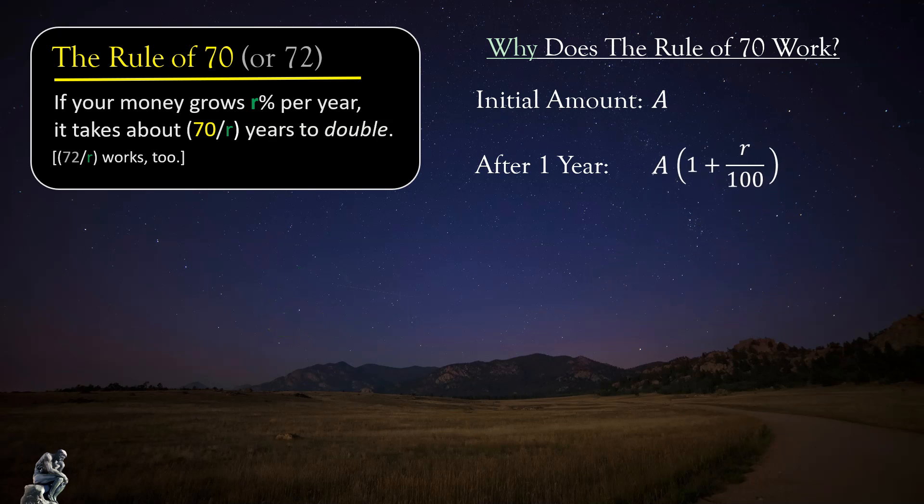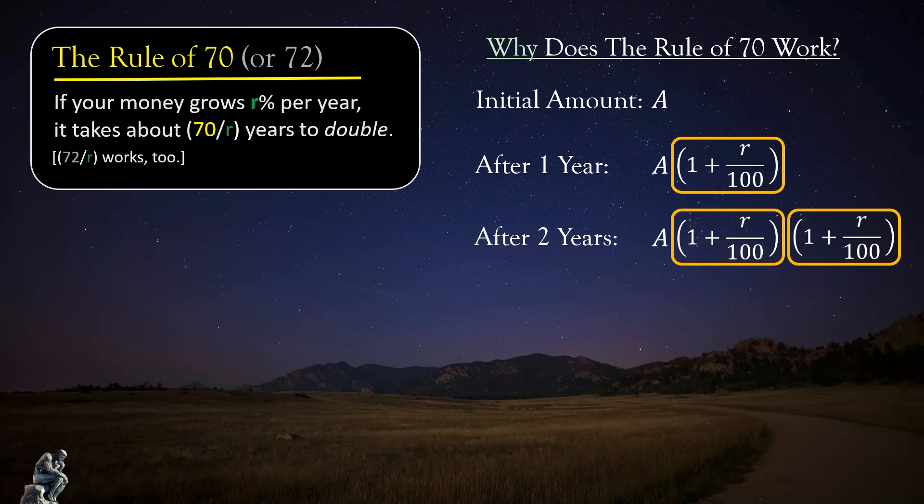Good. The key observation here is that whatever our initial amount was, to determine what we'll have one year later, we simply take that initial amount and multiply it by this expression in the orange box, one plus the growth rate over a hundred. But don't even think about the details of that expression for now. Just think of it as the magic orange box that takes us algebraically from one year to the next. For example, how much will we have after two years? Well, we just take what we have after one year and multiply it by the orange box. This gives us A times two copies of the orange box, or as we'd write more compactly, A times the orange box squared.